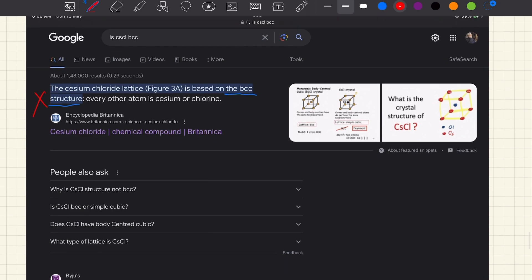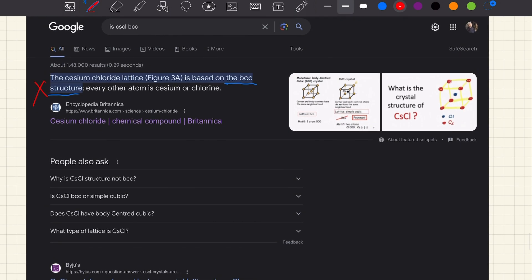Another answer from a famous Indian online teaching site for school students, and this site again says cesium chloride is formed by BCC crystal lattice. So there is widespread misconception on the web here.